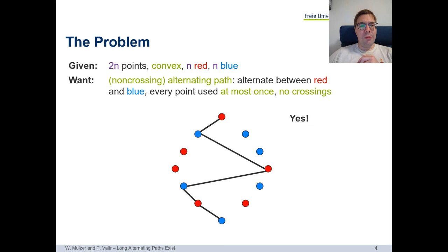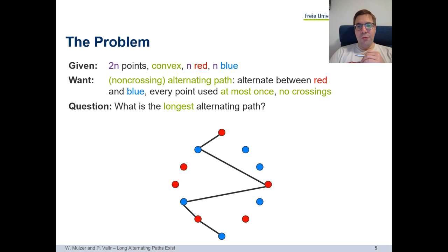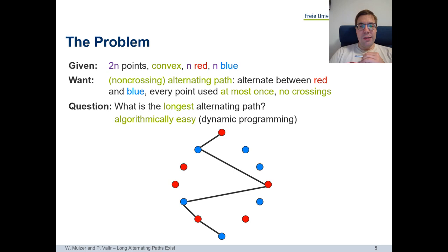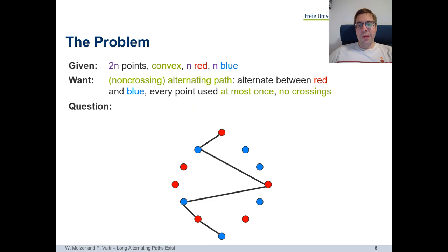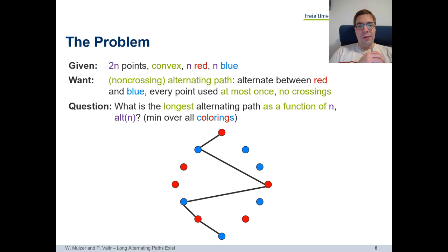Now that we have this definition, there are several algorithmic questions one might ask. The first question is: given a set of 2n endpoints in convex position with n red and n blue, find a longest alternating path — one with the maximum number of vertices. It turns out this is algorithmically easy. It's a simple exercise in dynamic programming. You can write a dynamic program that solves this in O(n³) time quite easily, and it can also be improved to O(n²).